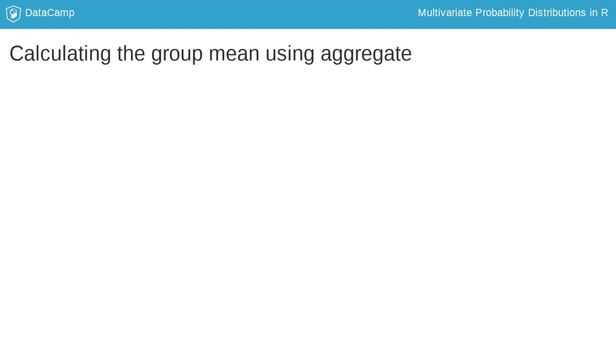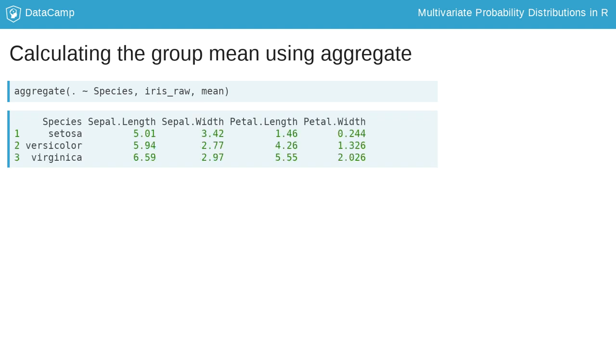In contrast, the aggregate function uses a formula interface. The period on the left hand side of formula indicates that we want the means of all variables in the data frame, except the variable specified as the one to group by, which is listed immediately after the tilde.